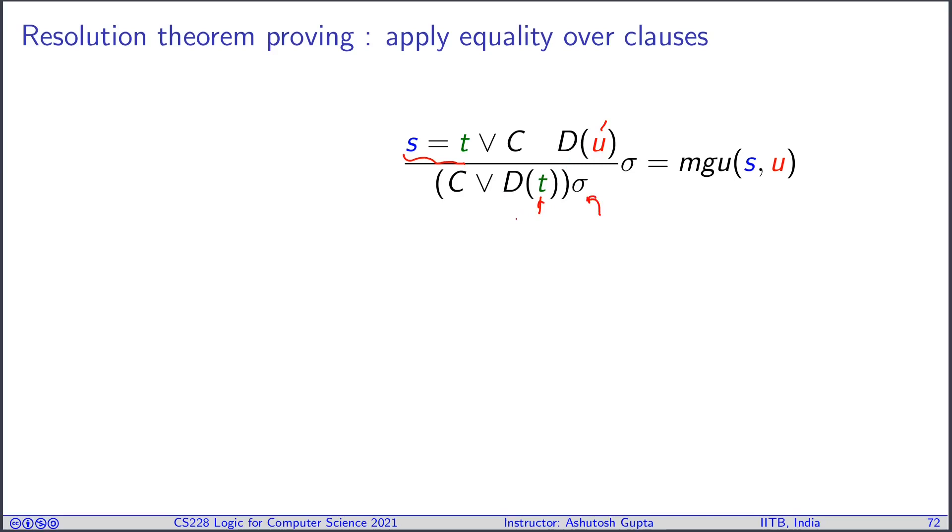Basically you replace U by D, and then you apply this unifier which makes them equal. Therefore it's an okay thing to do, and then you can just drop x equals D. This is a valid conclusion, and this is called paramodulation.